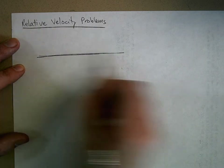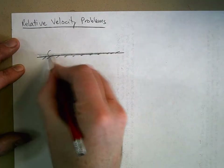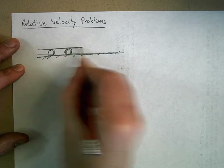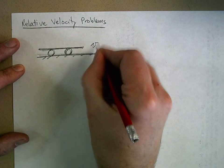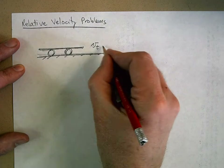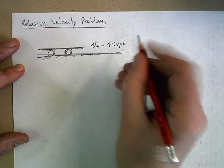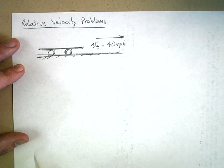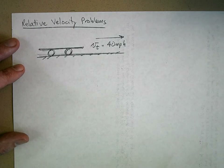Suppose this right here is flat ground with a railroad track, and we're going to put a flatbed railroad car on it. We're just looking at a side view. The velocity of the train, V sub T, is equal to 40 miles per hour. So we can draw that as a vector — the train is moving to the right at 40 miles per hour.